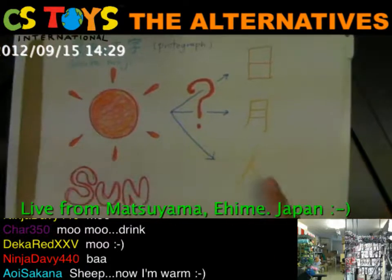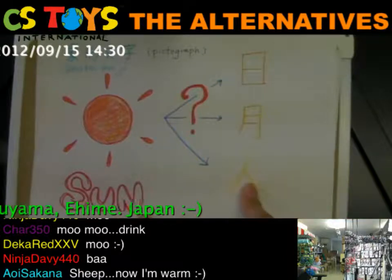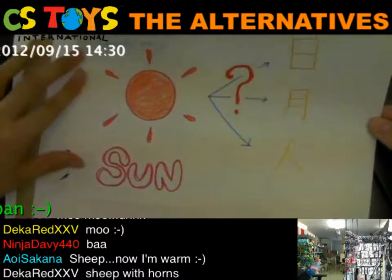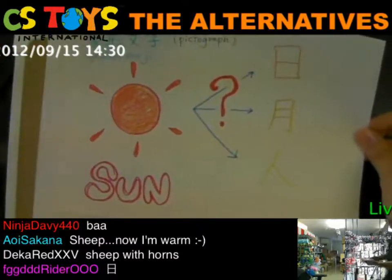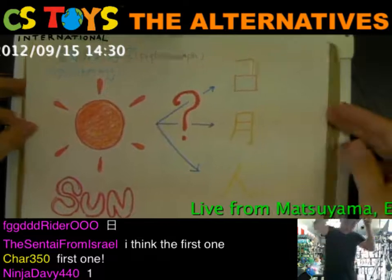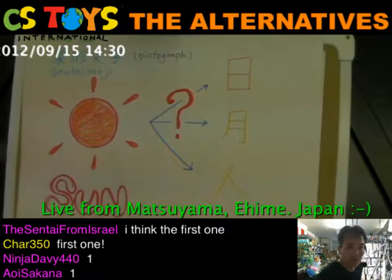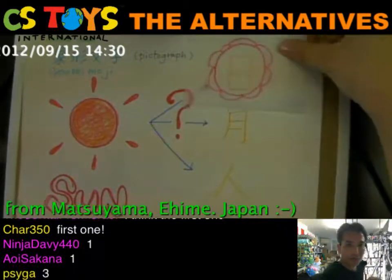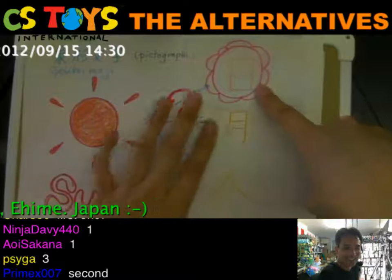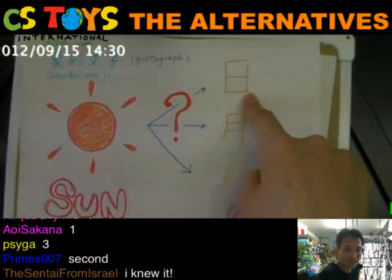So guess: which of these three characters is originated from 'sun'? Do you know? The answer is this one. This means sun - in Japanese we call it hi or nichi.